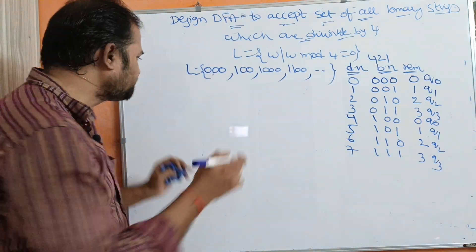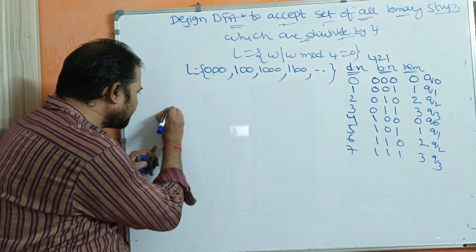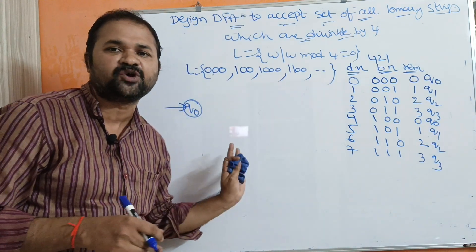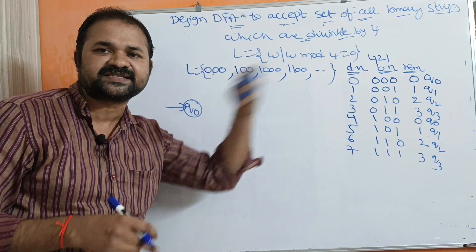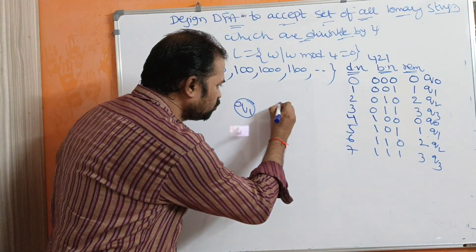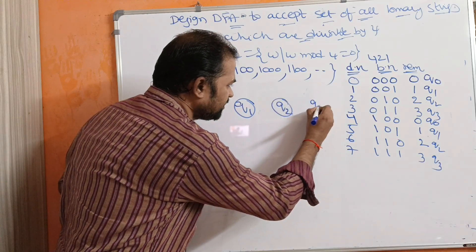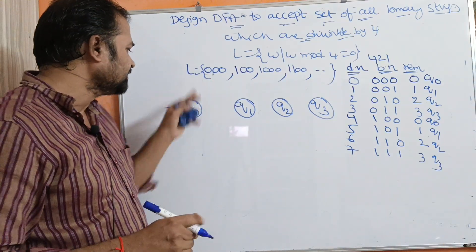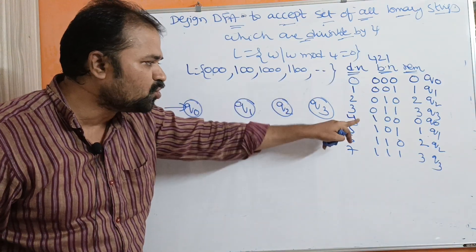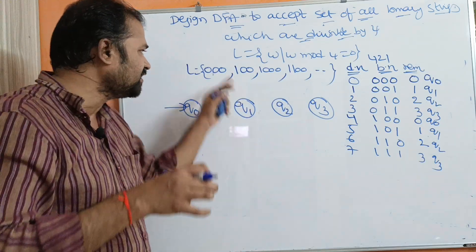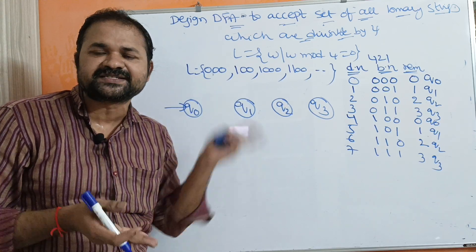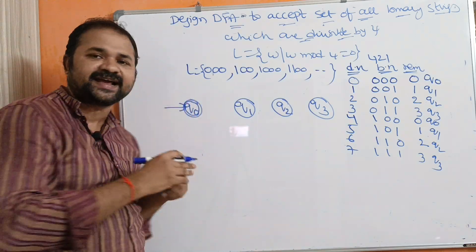Now we need to construct the DFA. We require 4 states. Q0 is the initial state representing remainder-0 binary numbers. Q1 represents remainder-1, Q2 remainder-2, and Q3 remainder-3 binary numbers. Since 0, 4, 8, 12 all have remainder 0 when divided by 4, Q0 is both the initial state and the final state.